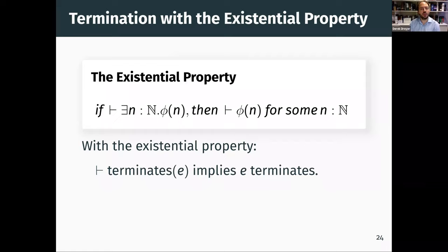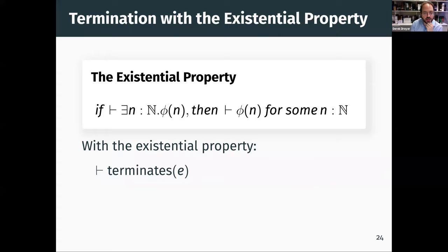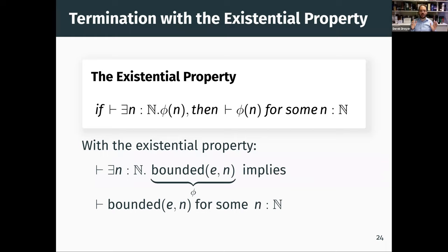It's actually very simple. Suppose we had the existential property. We're going to prove that if you've proven terminates(E) in Iris, then that implies that E in fact terminates — meaning all reduction sequences terminate. We expand it out: terminates(E) is exists N, bounded(E, N). Using the existential property, we hoist out that existential. So we learn that in fact there exists an N such that in Iris, we can prove bounded(E, N). And we already know from existing work that if you've proven bounded(E, N) in Iris, that implies E actually terminates within N steps. So we've proven there exists an N that bounds all reduction sequences of E.